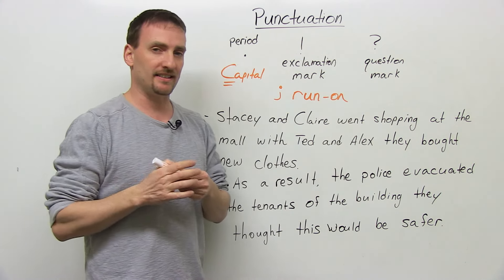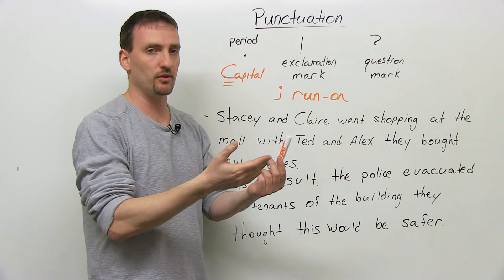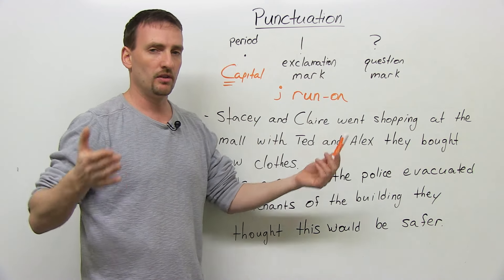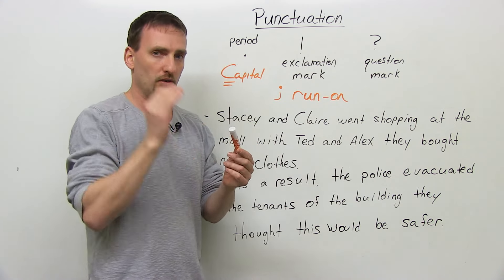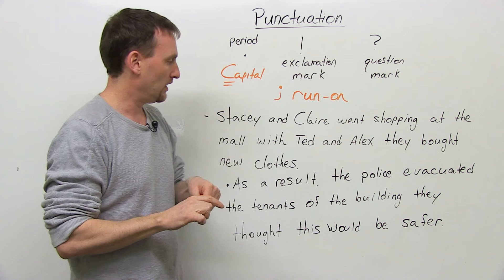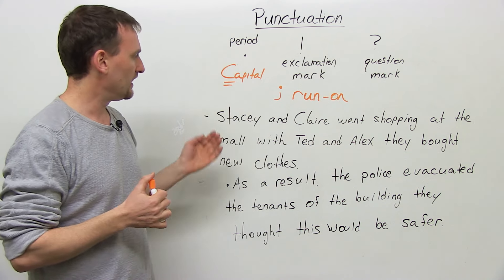A run-on sentence is a sentence that has two subjects, two verbs, no spacing, no conjunction, no period. Let's look at an example of a run-on sentence.